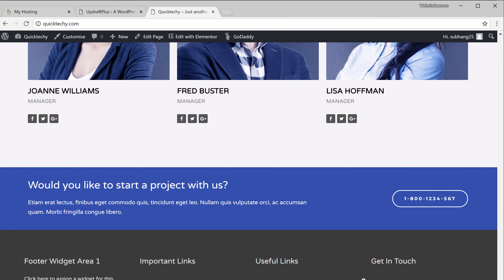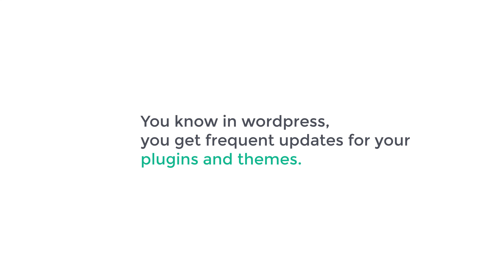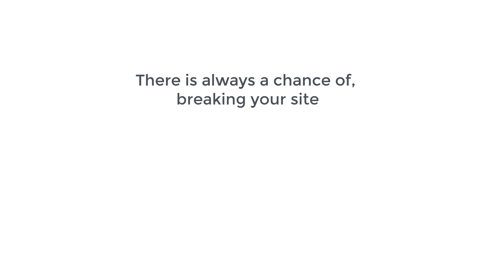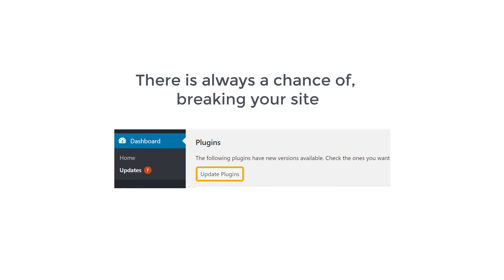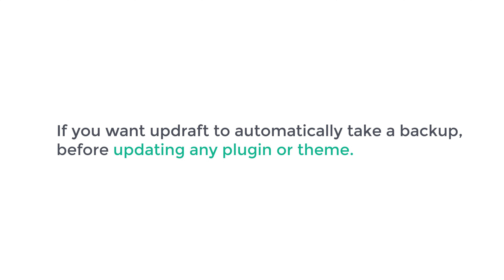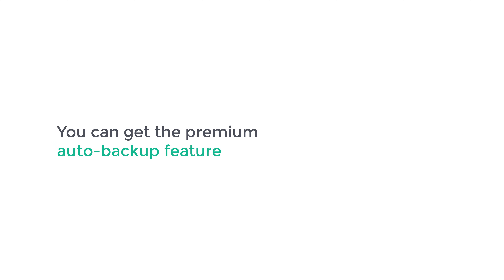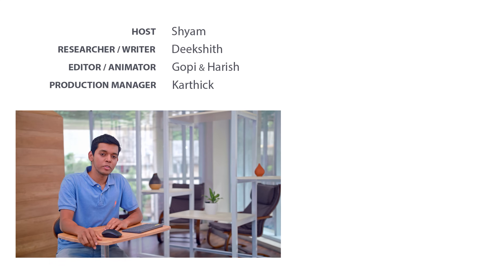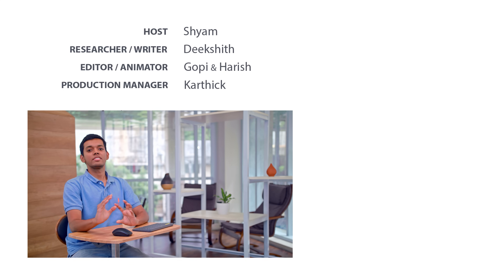So everything is done. This is how you can take a backup of your site and then restore it when you need it. Now in WordPress you get frequent updates for your plugins and themes, and there is always a chance of breaking your site when applying an update. If you want Updraft to automatically take a backup before updating any plugin or theme, you can get the premium auto backup feature by clicking this link. I hope this video helped — thanks for watching, I'll see you in the next video.